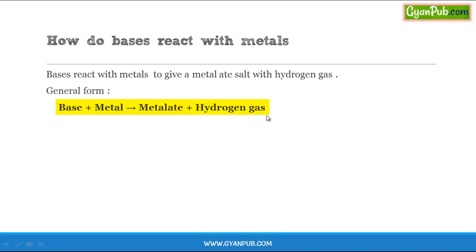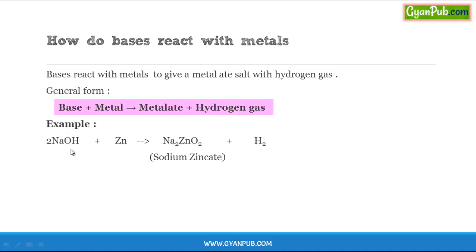Here, the metalate salt is a salt and evolution of hydrogen gas takes place. For example, sodium hydroxide (NaOH) when reacted with zinc metal (Zn) gives rise to sodium zincate, which is a metalate salt, and hydrogen gas. The sodium zincate formula is Na2ZnO2. The reaction takes place when zinc displaces hydrogen from the base NaOH and combines with the remaining part of the base to form sodium zincate, while the displaced hydrogen is evolved as hydrogen gas.